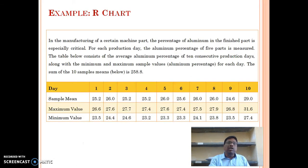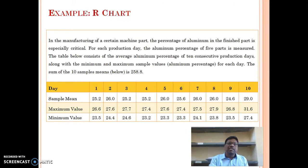Here is an example of an R chart. The data shows day (time) from 1 to 10. For each day, sample mean, maximum value, and minimum value are given. The sample mean for day 1 is 25.2, day 2 is 26.0, and day 3 is 25, and so on for each day.